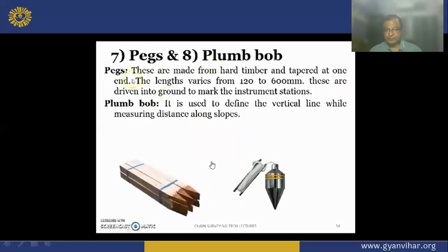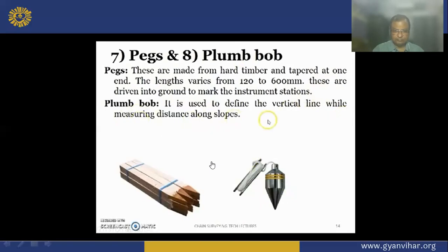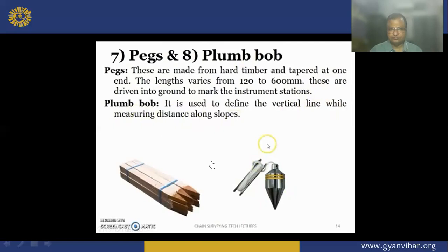Next are pegs and plumb bob. Pegs are made of timber or steel, and the length varies from 120 to 600 mm. These are driven into the ground to mark the instrument stations. The plumb bob is used to define the vertical line while measuring distance along slopes. It represents verticality — for example, if you insert a ranging rod and it bends, you can use the plumb bob to check its verticality and also to check verticality of lines while chaining across slopes.